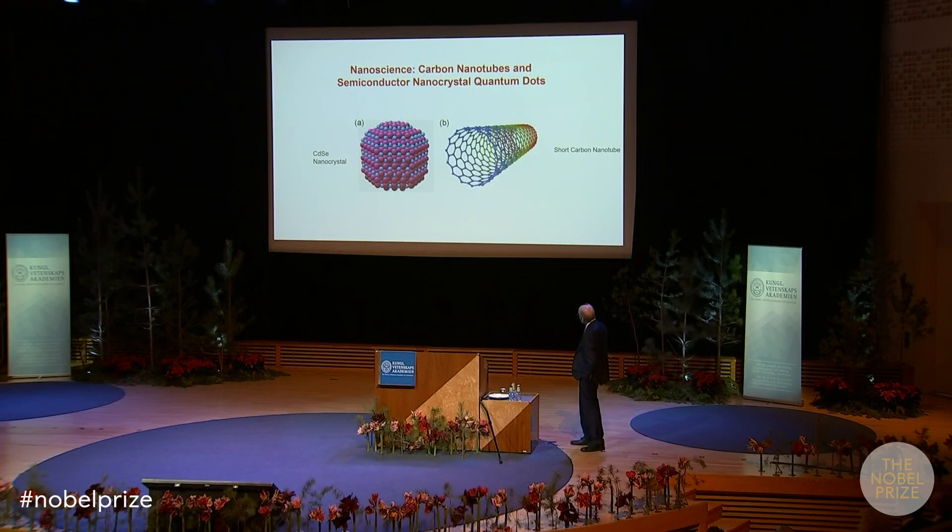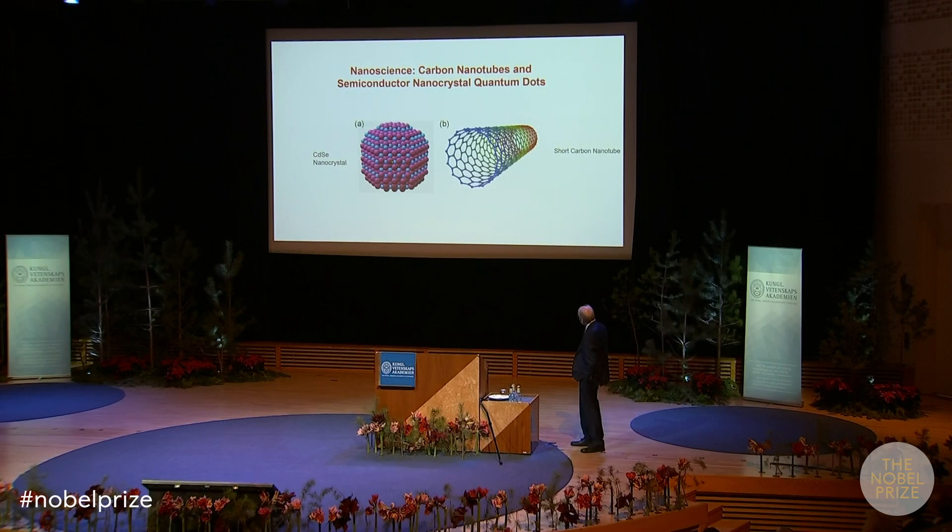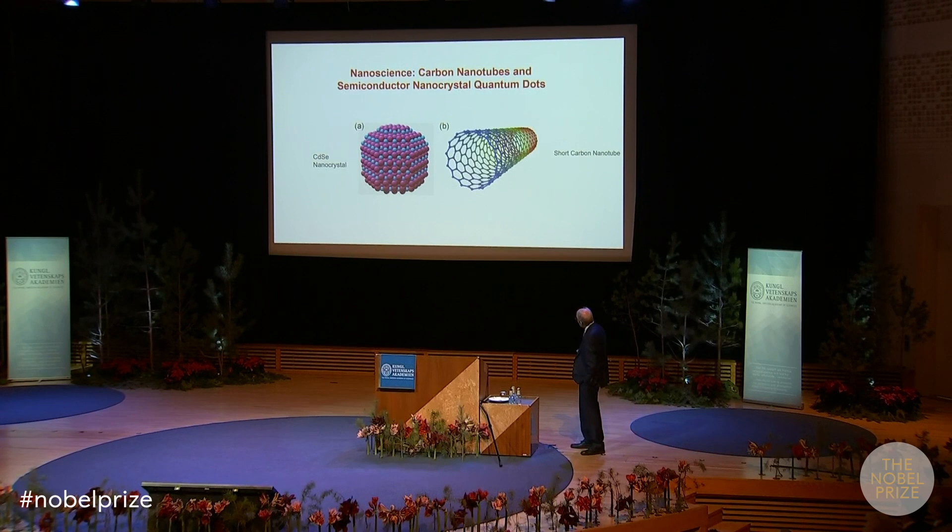Cadmium selenide is a two-six semiconductor. The red balls are selenium atoms; the small blue ones are cadmium atoms or ions. It's a tetrahedral material — each blue ball is surrounded by four red ones, and each red one is surrounded by four blue ones.